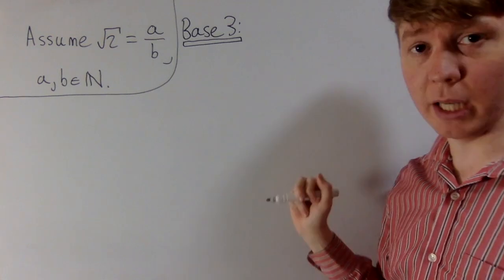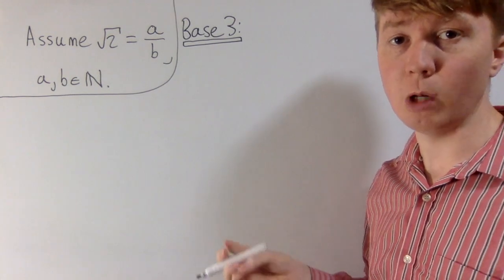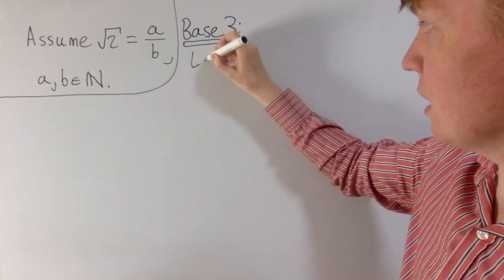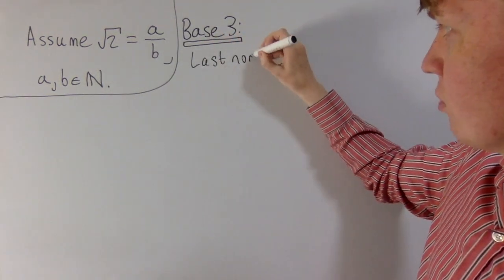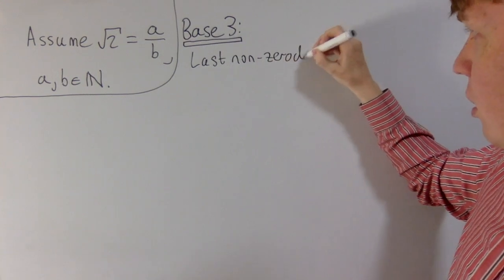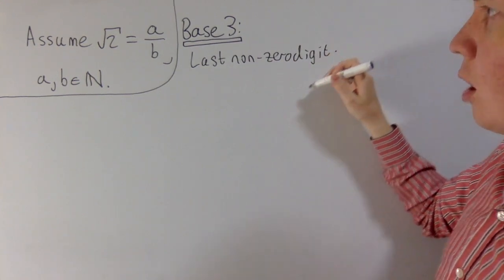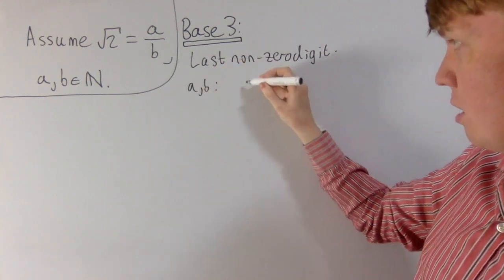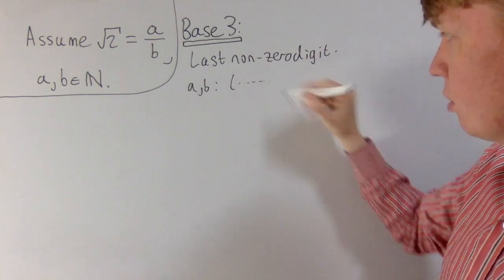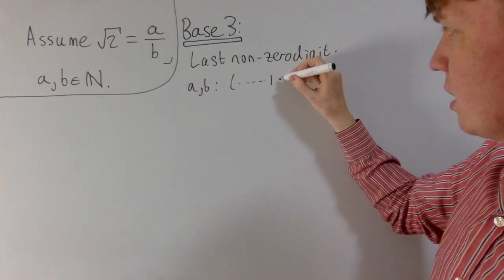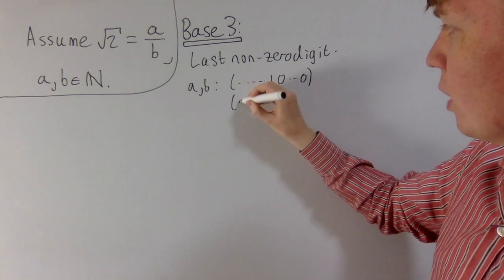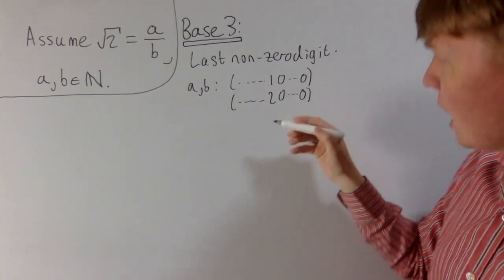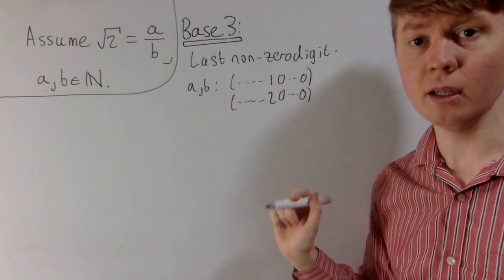What's interesting about base 3 is there's only so many options for what our digits can be — they can just be 0, 1, or 2. And what we're going to do is focus on the last non-zero digit of numbers written in base 3. So for a and b, these are just integers, and the last non-zero digit is either 1 or 2, potentially followed by some zeros.